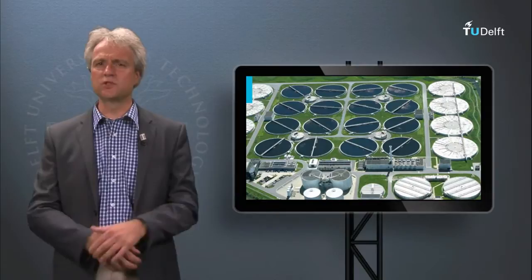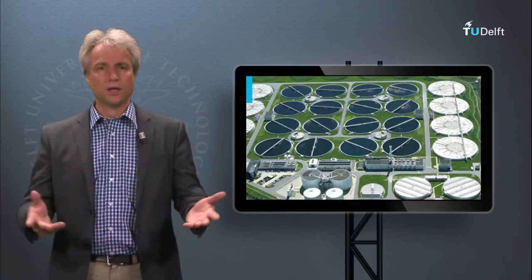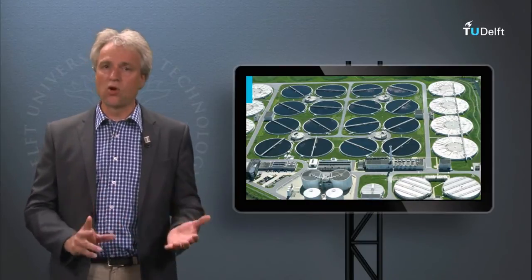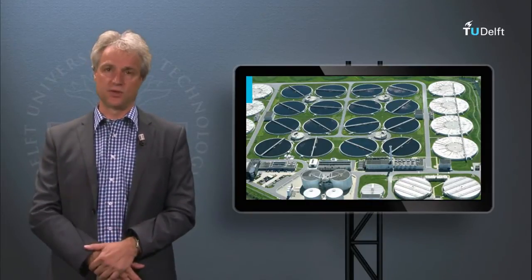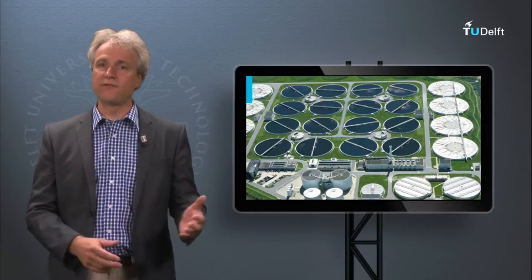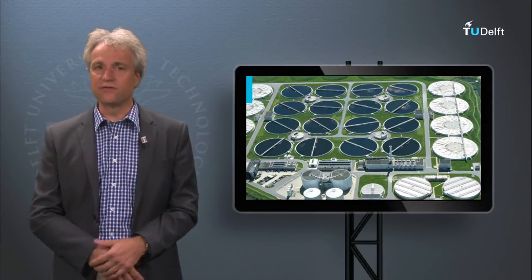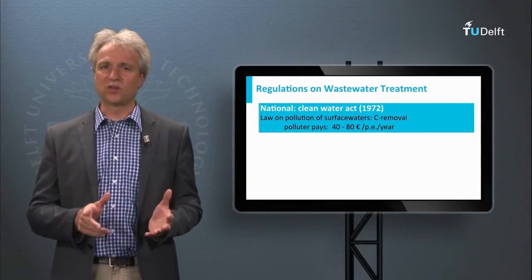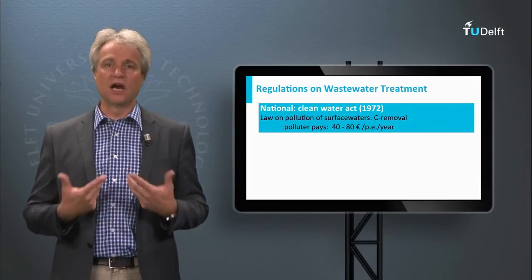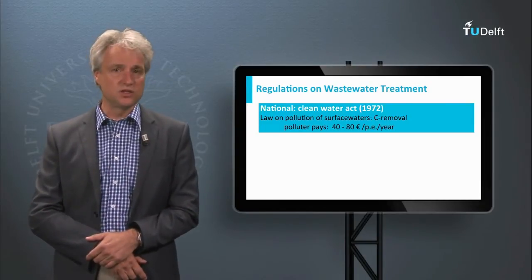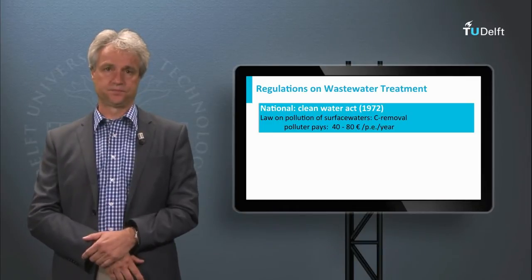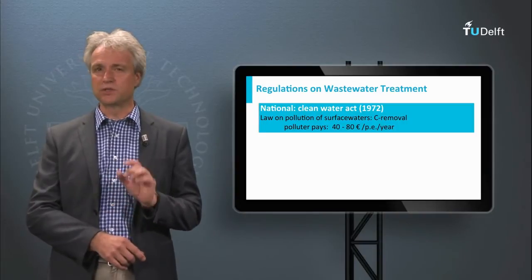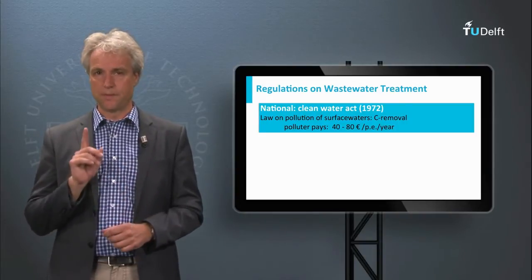And since when do we treat urban sewage? The obligation to treat sewage up to standards prior to discharge follows the deplorable state of our surface water in the sixties of the past century. Lifeless surface waters were common and species diversity was at stake. Only in the early seventies was the Clean Water Act approved by our government, and from that time onwards it was forbidden to discharge without treatment. At the same time, a cost recovery system was invented, and the polluter pay principle appears to be successful up to today.